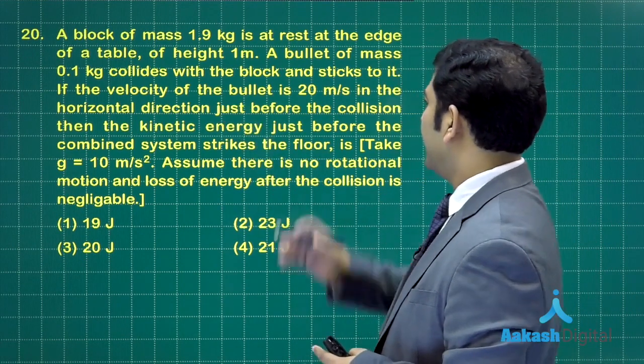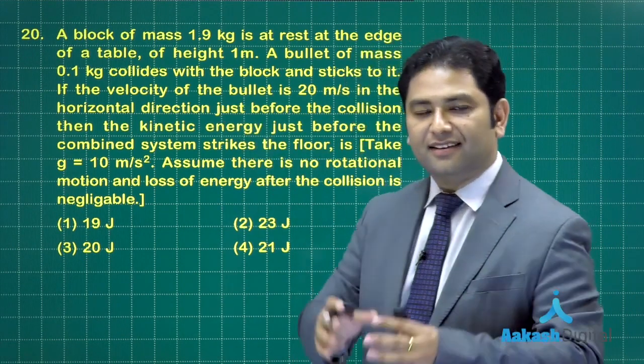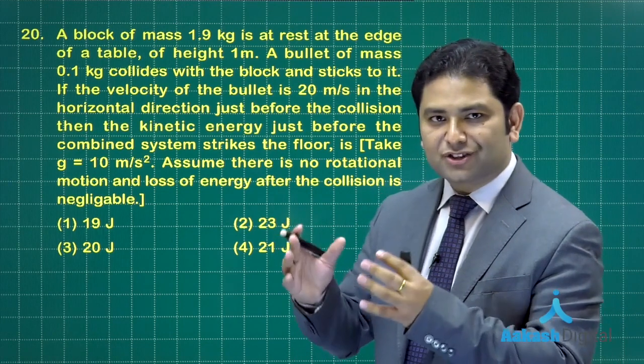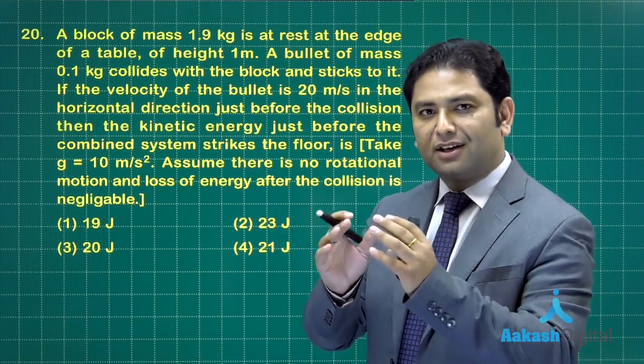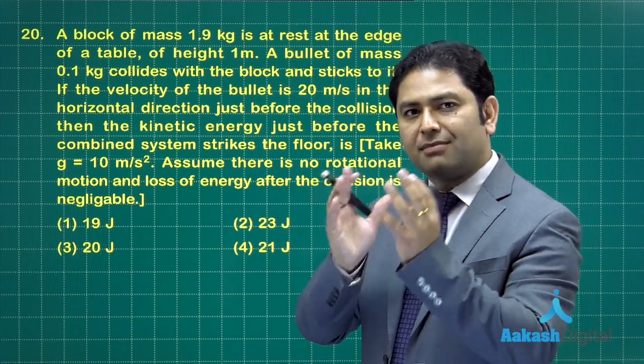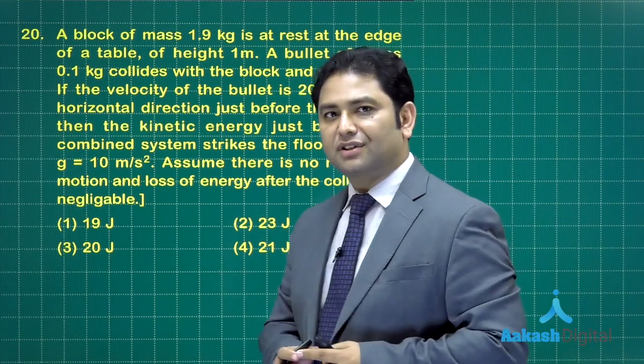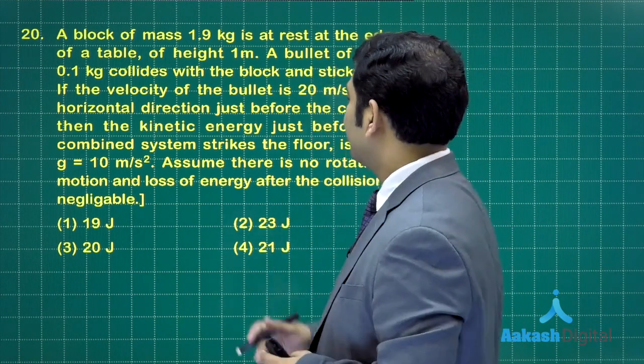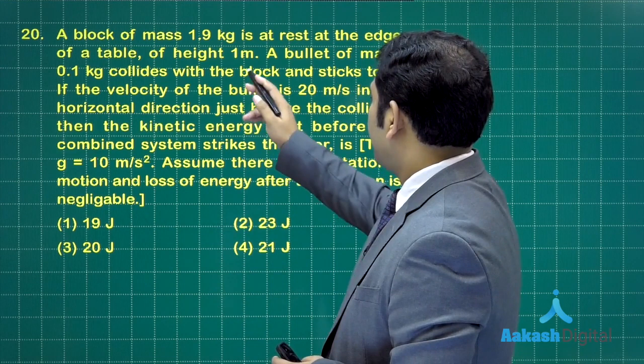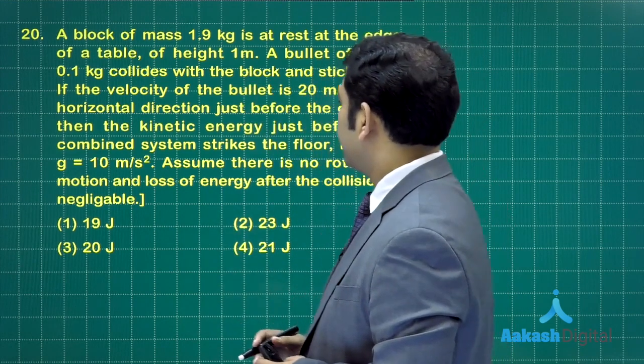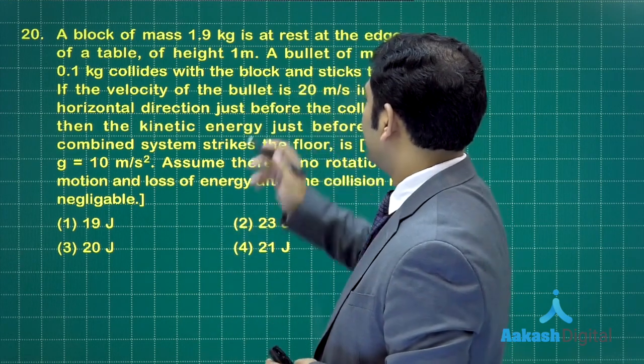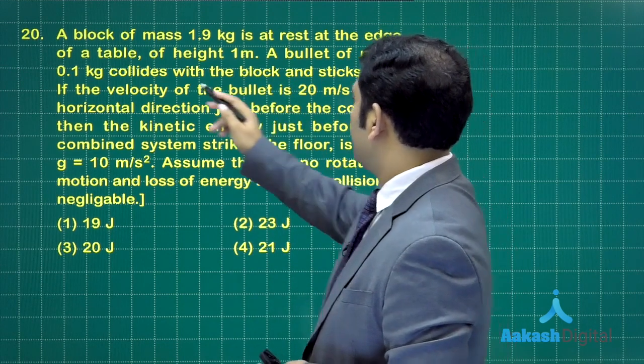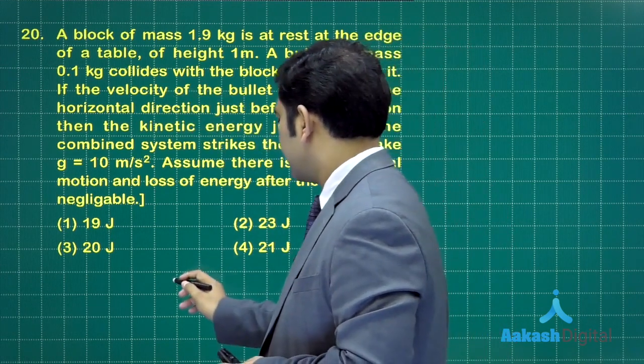Initially the bullet had a speed 20 meter per second. Based on this data, we can calculate the velocity of the bullet-block combined system just after the collision. The block's initial momentum is zero, but the bullet's initial momentum is 0.1 kg times 20 meter per second, which is 2 kg meter per second.